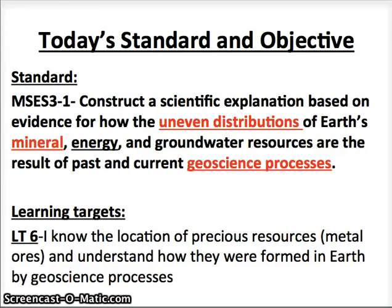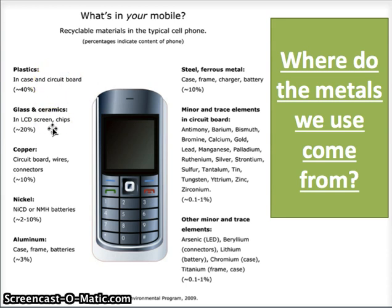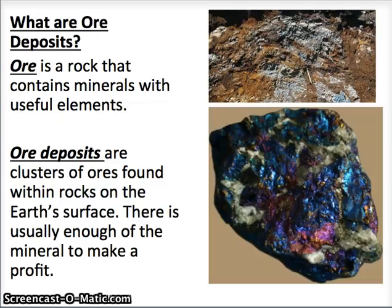Today we're going to finish off our unit with LT6, looking at precious resources — specifically metal ores, how they were formed in the earth, and how we mine them out of our crust. Here's a very common item where we find metals: a phone. A phone is made out of mostly plastic and glass, but the rest of it is actually all metal elements. So where do the metals we use come from?